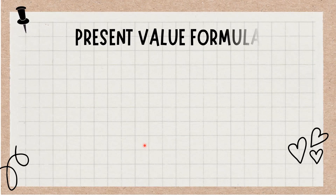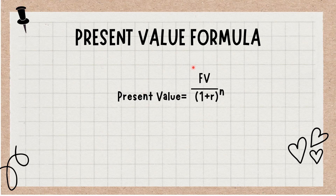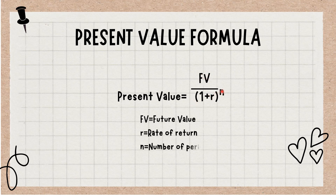The present value formula and calculation: Present Value equals FV divided by (1 + r) to the power n, where FV equals future value, r equals rate of return, and n equals number of periods.